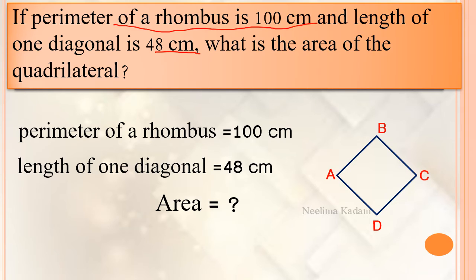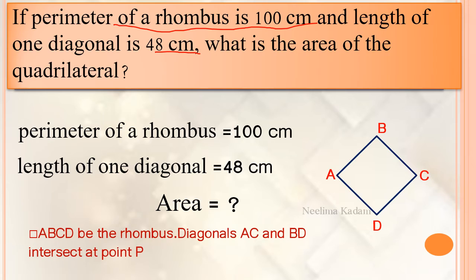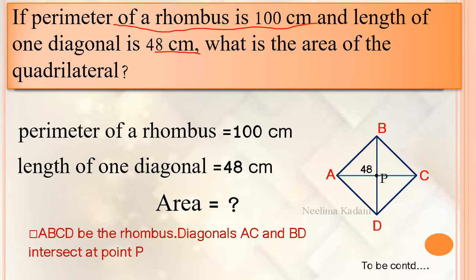Draw the figure first. Let rhombus ABCD be the rhombus. Diagonals AC and BD intersect at point P. As we know, diagonals of the rhombus bisect each other. Here, AC is given as 48 cm, and we want to find the area of this quadrilateral. The formula for area of rhombus is half into the product of the lengths of the diagonals.